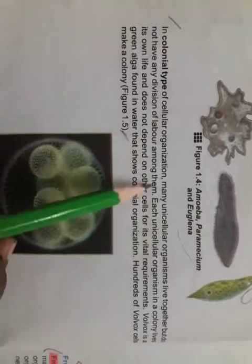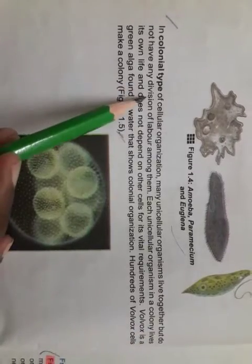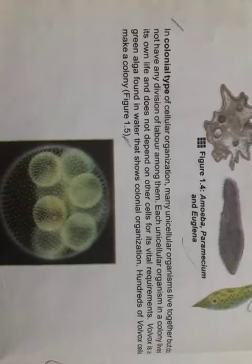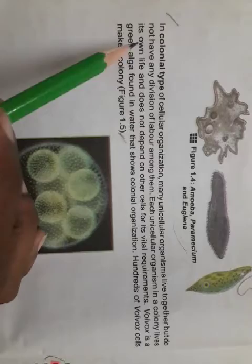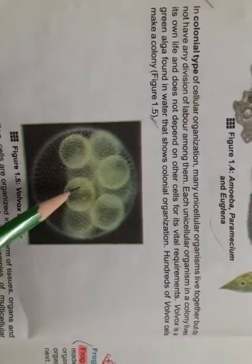In colonial organisms, they do not have any division of labor among them. They live together but do not depend on each other. Each unicellular organism in a colony lives its own life and does not depend on other cells for its vital requirements. They only live together forming a colony; otherwise, all life activities they perform independently. For example, Volvox is a type of green algae found in water. It shows colonial organization — a colony of hundreds of Volvox cells lives together but each performs its life activities independently.